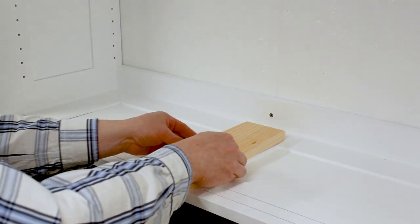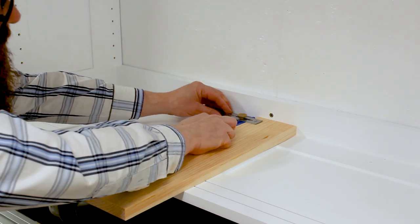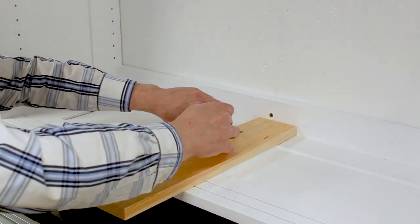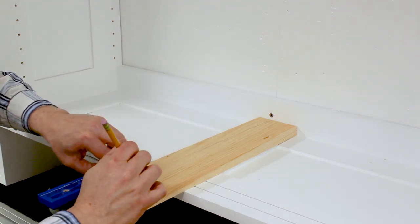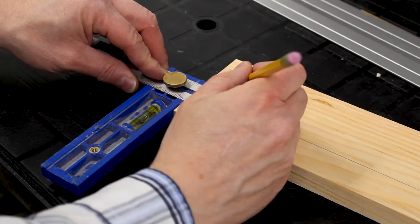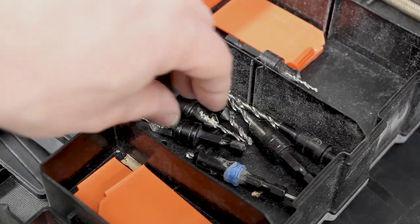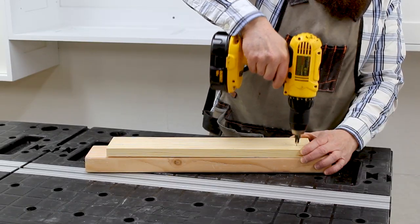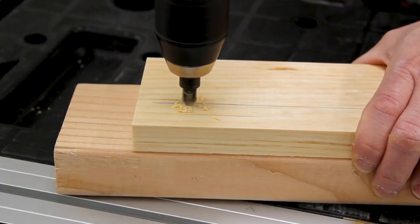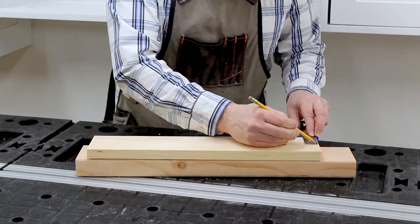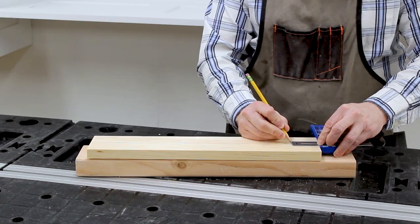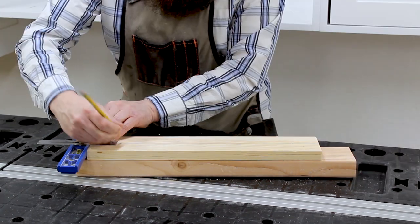I centered the brace on the middle rail and used my multi-mark to transfer the location of the stud and made marks for countersink holes that will attach the brace to the wall. On the other side, I drew a line down the center and made marks for countersink holes that will attach the brace to the divider.